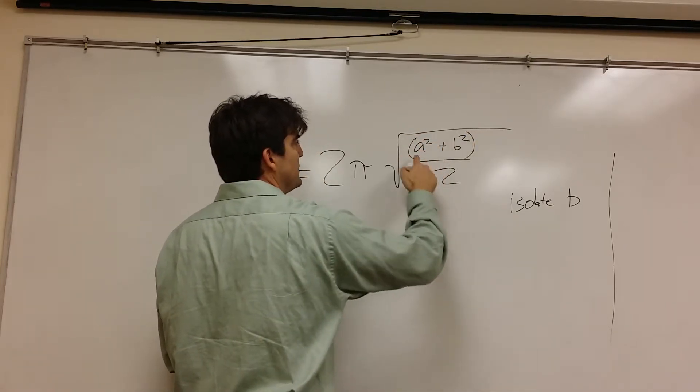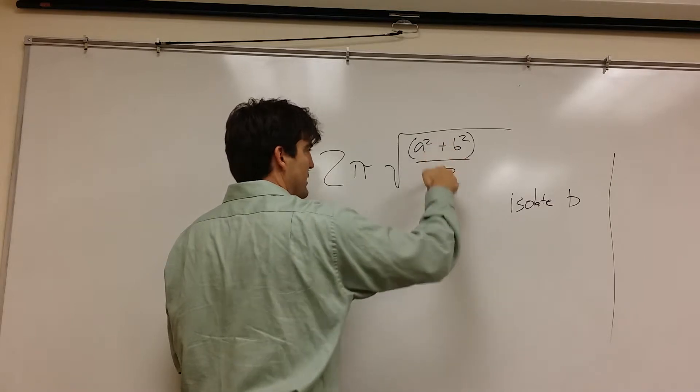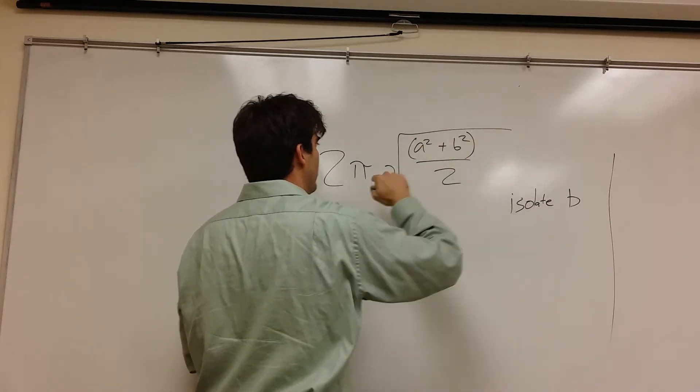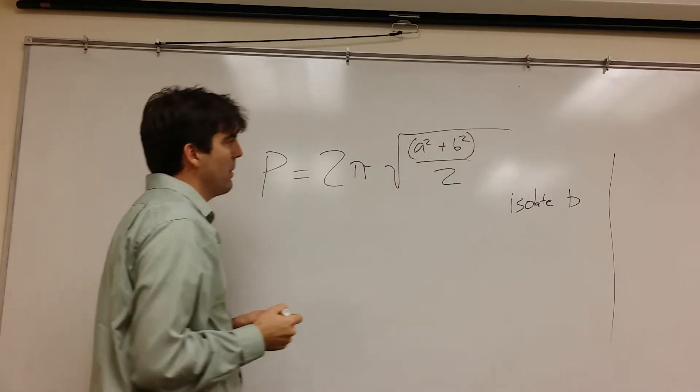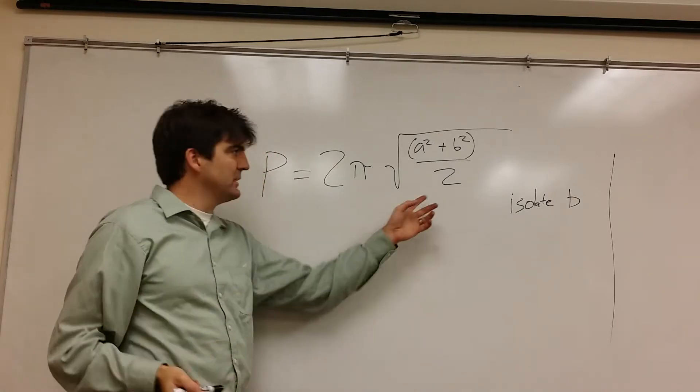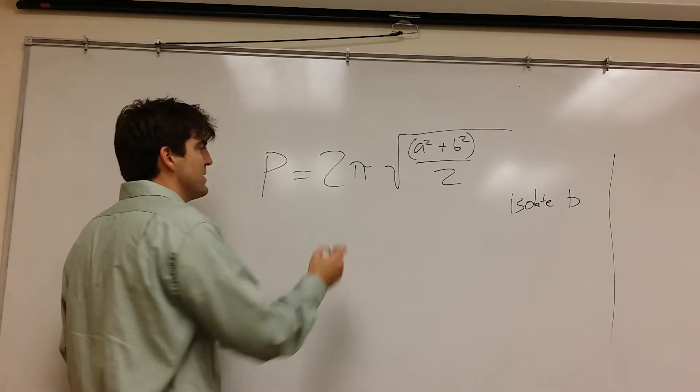So I would do those exponents, and then add them, and then divide, and then square root, and then times 2π. So the last thing I said was times 2π, so we want to peel that layer off and do the opposite of that.